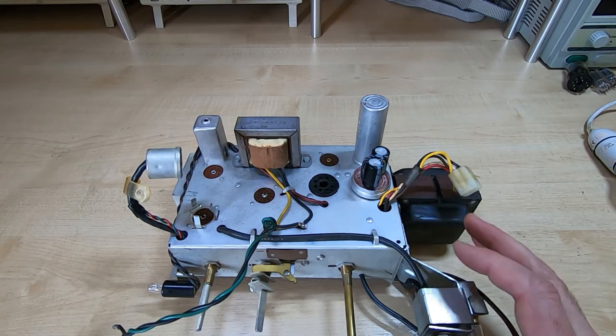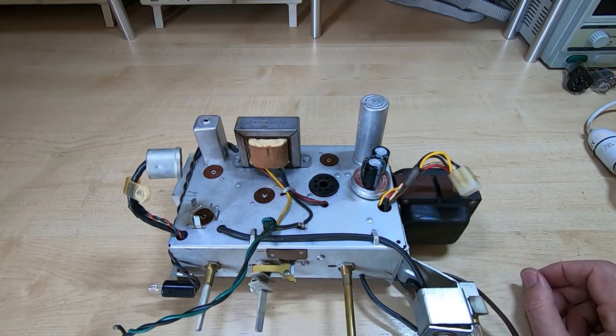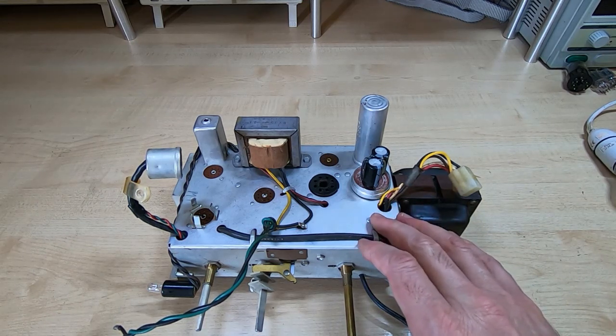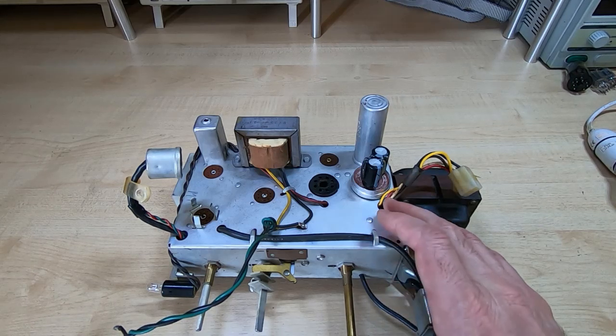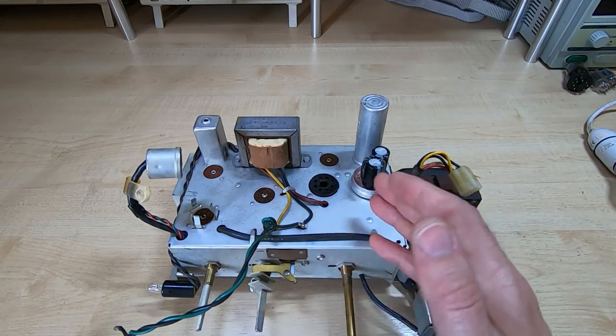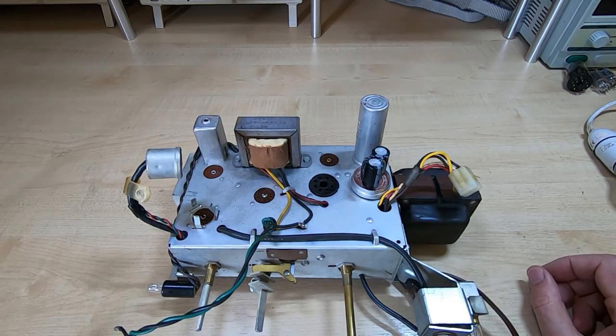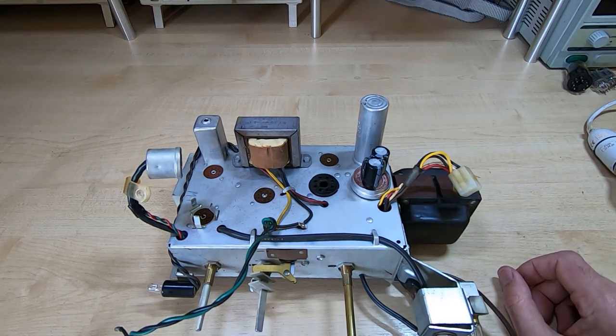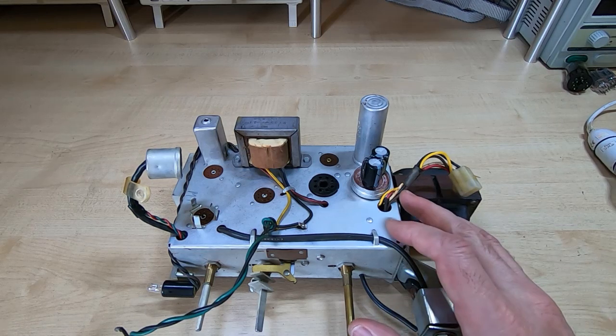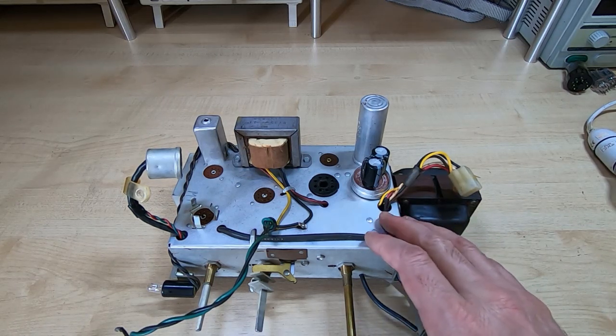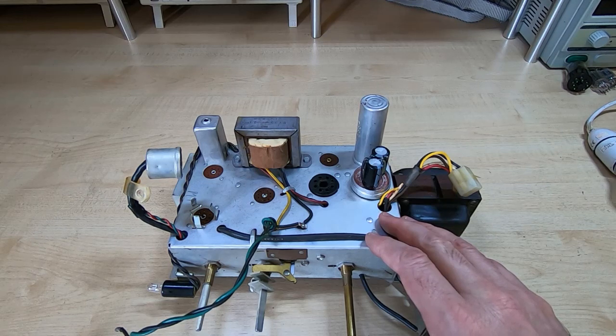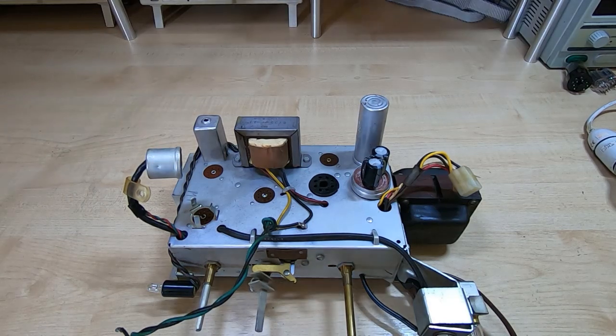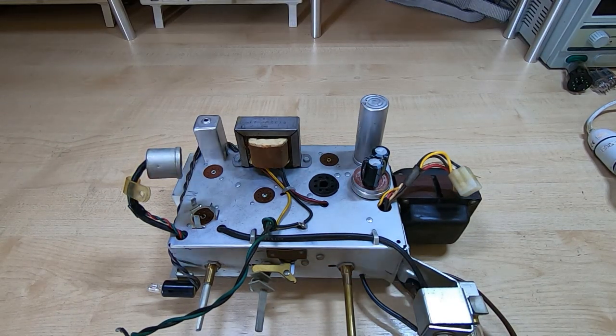But what I'll do now is initially power it up with no tubes in whatsoever. This is a parallel strung heater chain. That is all the heaters are wired in parallel rather than series, which means that I can plug in any particular valve and the heater will still come on. With series strung units, you have to plug them all in or put dummy loads in, otherwise you won't get any heater current. It does give me an easy advantage that I can put in just the rectifier and it will still come on. But before I do that, I want to make sure that we're not going to blow the rectifier heater wide open if there's a wiring fault.